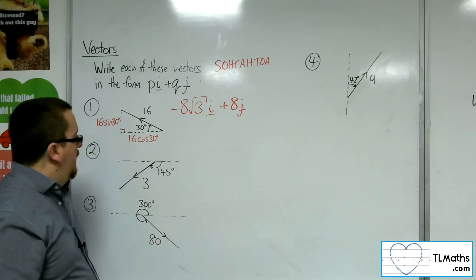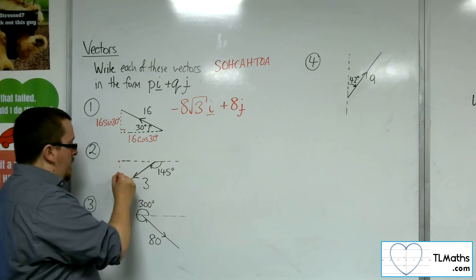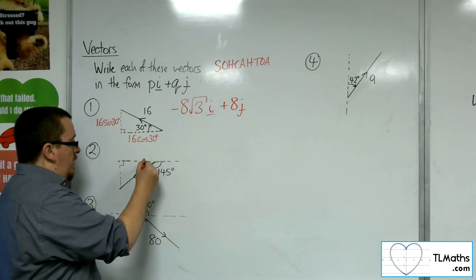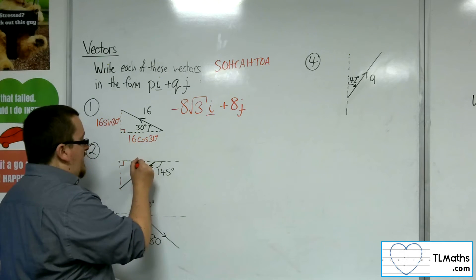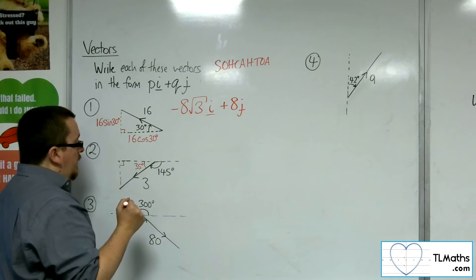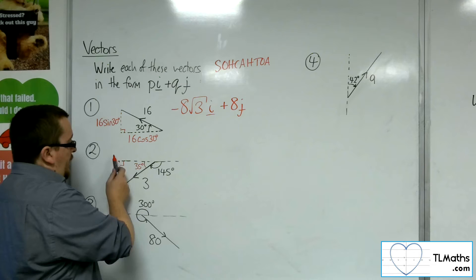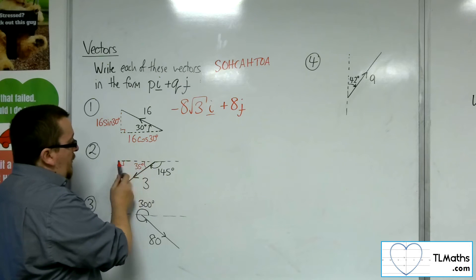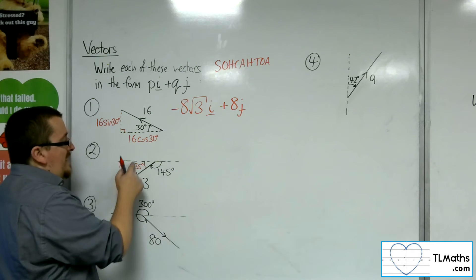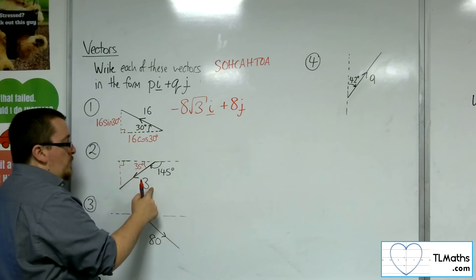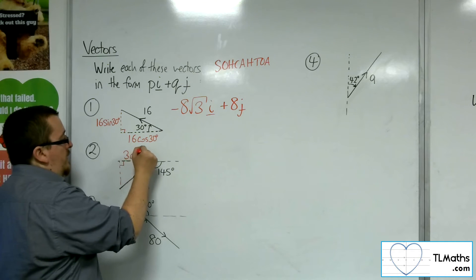Let's have a look at number 2. So we've got 145 degrees measured that way. So if I turn this into a right-angled triangle, I can find that angle by just subtracting it from 180. So that's 35 degrees. So I would want the adjacent side and the opposite side. Now, for the adjacent, I've got the hypotenuse, I've got the angle. So cosine of 35 is equal to the adjacent over 3. So that means the adjacent is 3 cosine 35.